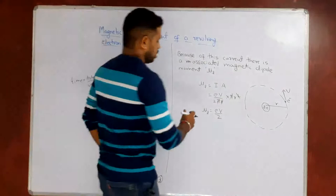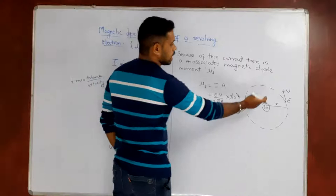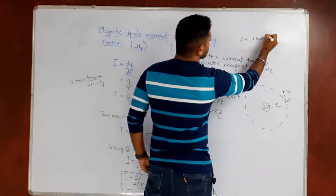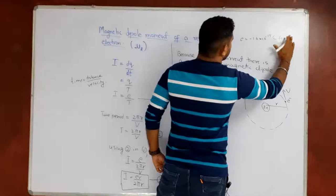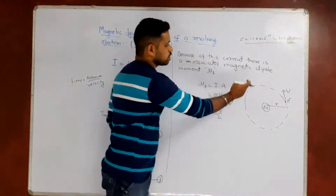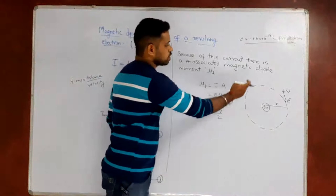But this magnetic dipole moment is not the correct one because I have taken the charge of the electron to be positive. Actually it is negative — e equals minus 1.6 × 10⁻¹⁹ coulomb for an electron. So it will be minus e. And v is the velocity of the electron.